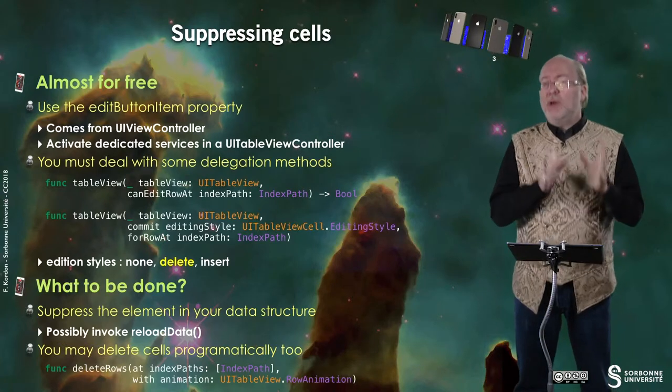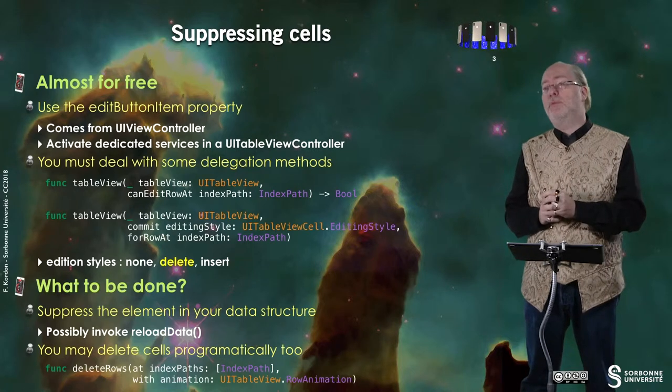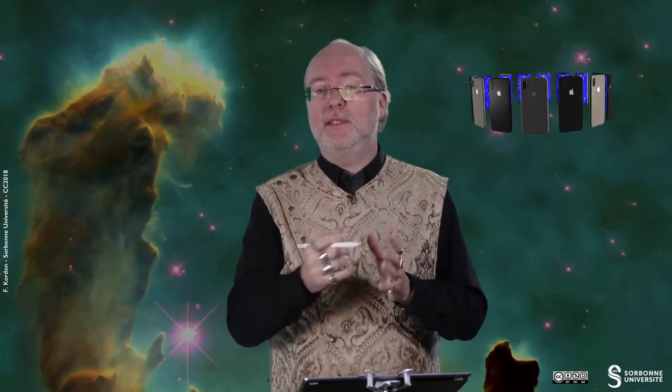You just have to suppress the element in your data structure — you have to update the data structure by having this element disappear — and possibly invoke reloadData. ReloadData is a way to request your UITableViewController to re-display the UITableView. For example, if you have odd cells in blue and even cells in red, and you delete a cell without doing anything, you will have two cells with the same color. So here you have to invoke reloadData.